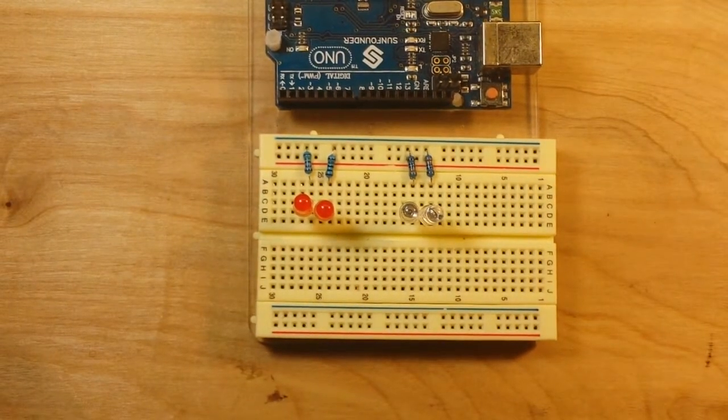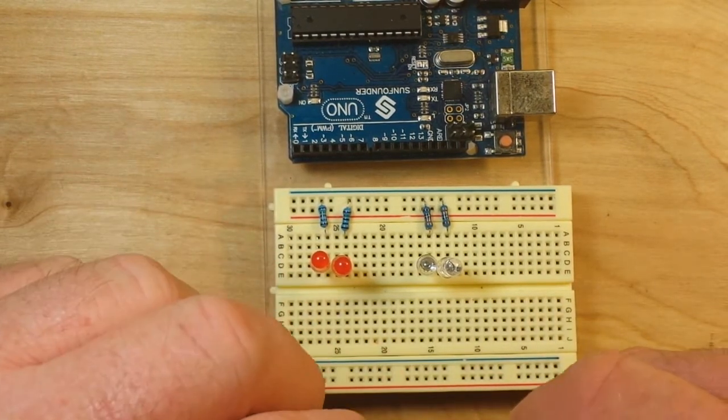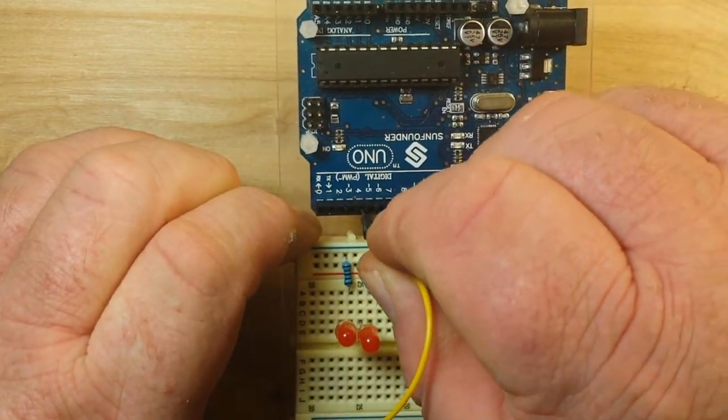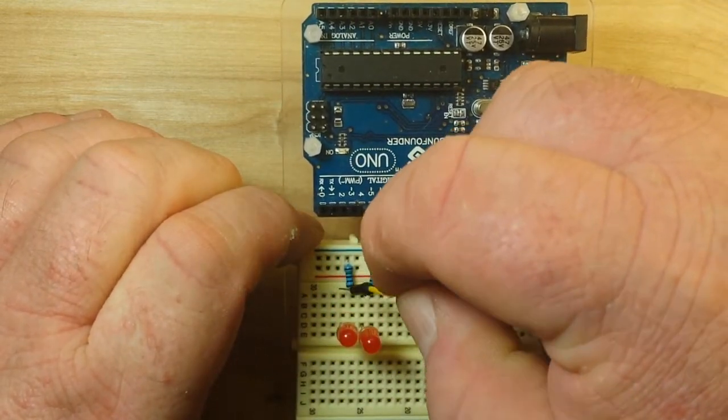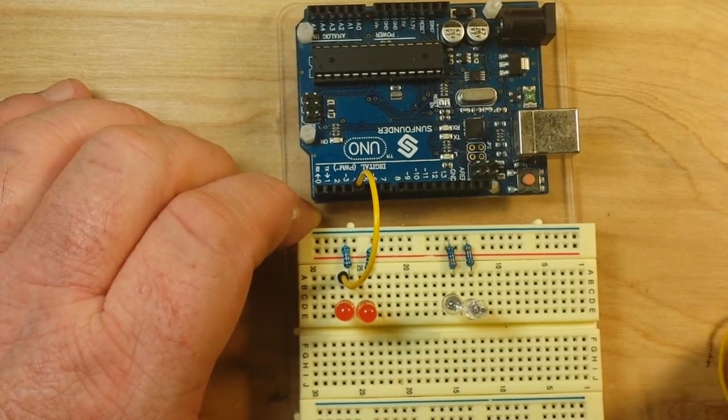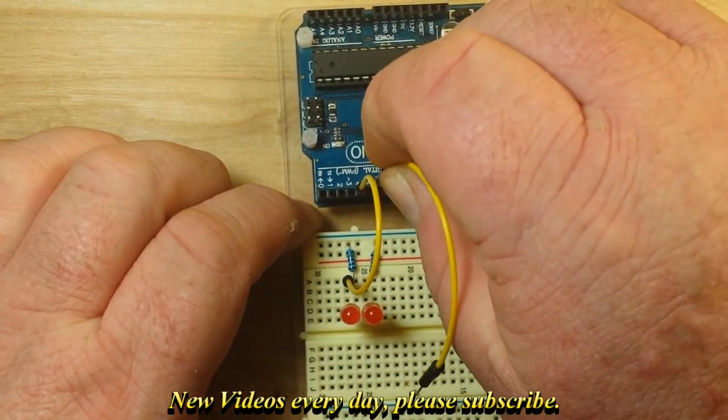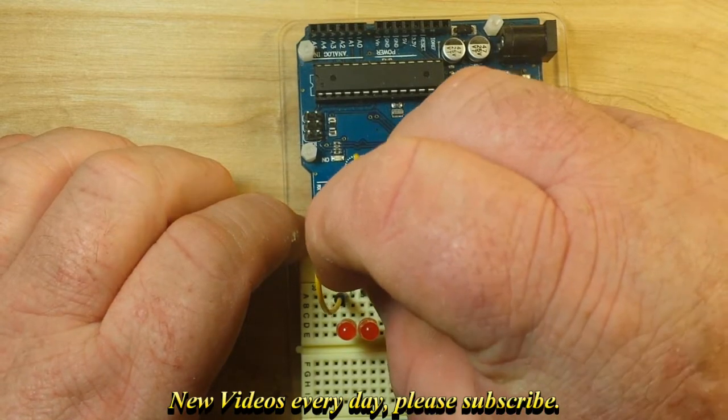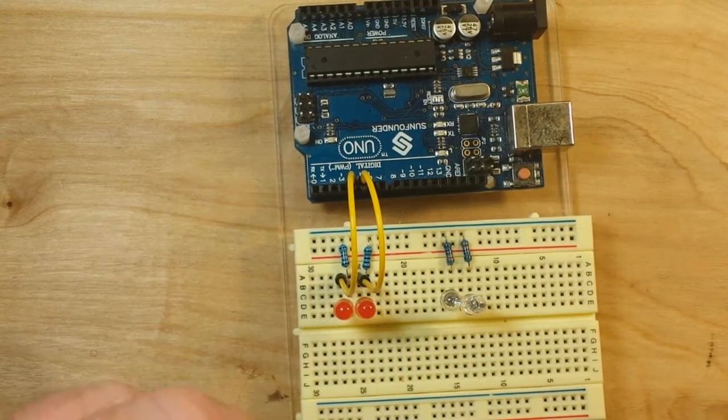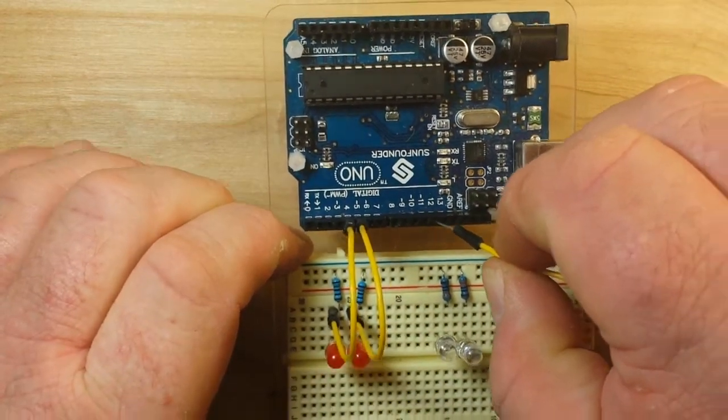So now to hook everything up, and you can place these in whatever positions you want. I just kind of stuck it like this. Like I said, you can do it however you like. We're going to take a wire from digital pin 4 and that goes to the anode or the positive side of the first red LED, and then a wire from digital pin 5 and that goes to the anode of the second red LED.